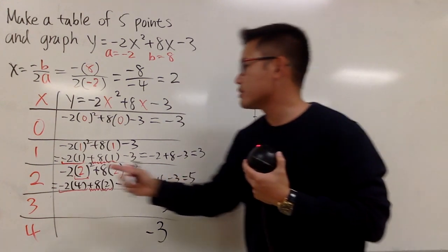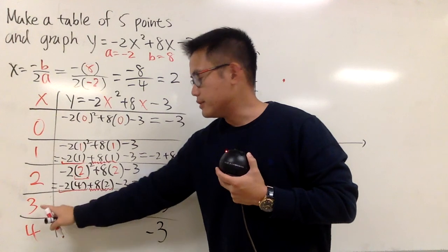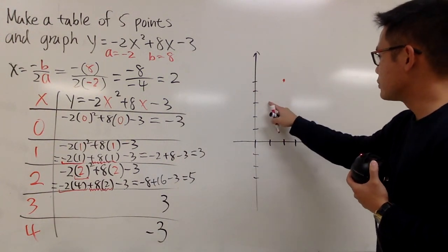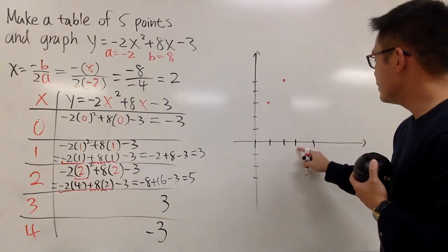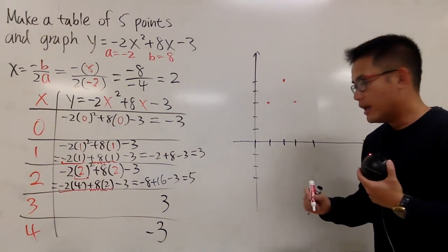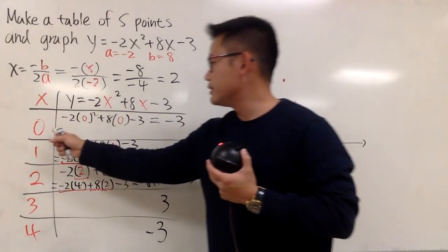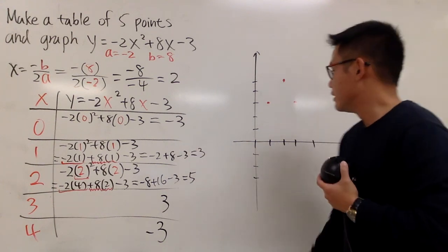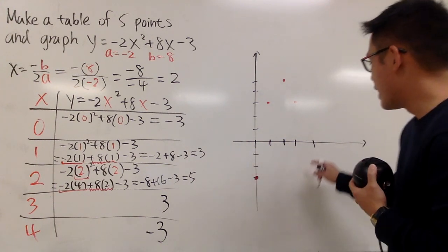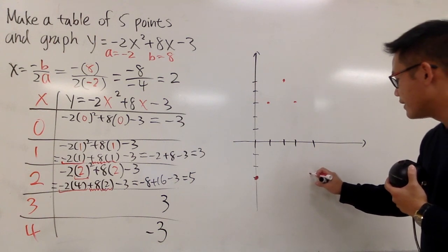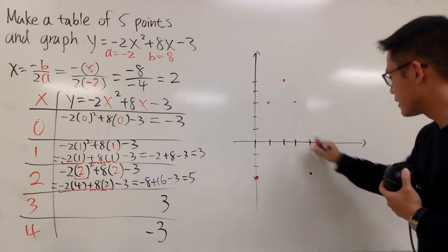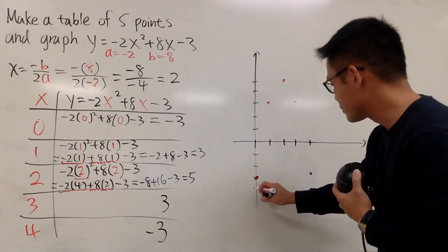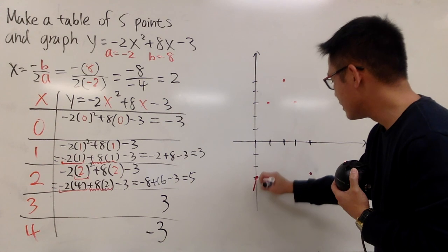And then, when x is equal to 1 and 3, the y values are both equal to 3. So, I will have 1, 3 right here, and 3, 3 right here. And then, when x is equal to 0 or 4, the y values are negative 3. So, when x is 0, we have negative 3. When x is 4, we also have negative 3. Anyway, we are just going to be connecting the dots with a parabola.